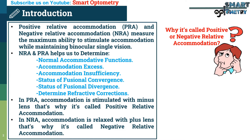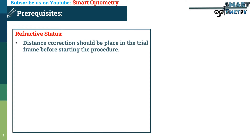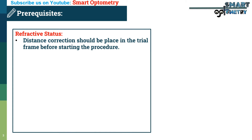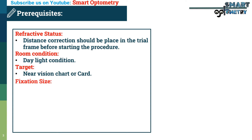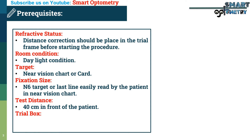What are the prerequisites for the test? The patient's refractive status distance correction should be placed in the trial frame before starting the test. Room condition should be daylight. The target is a near vision chart or card, fixation size N6 or last line easily read by the patient, at a test distance of 40 centimeters. A trial box with positive and negative lenses and trial frame will be needed.